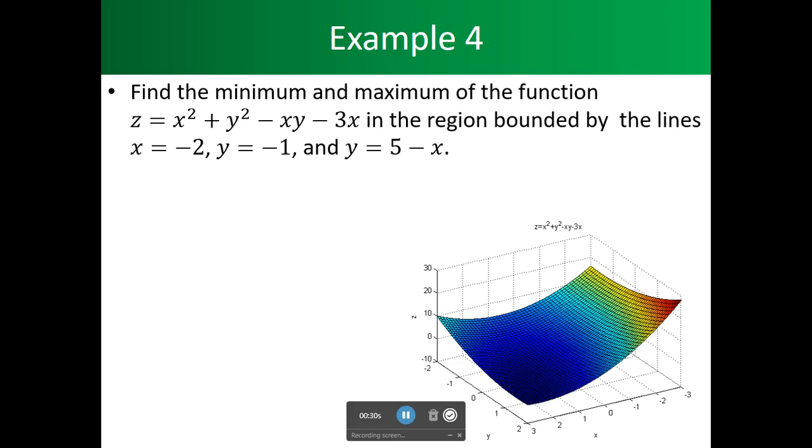Find the minimum and maximum of the function z equals x squared plus y squared minus xy minus 3x in the region bounded by the lines x equals minus 2, y equals minus 1, and y equals 5 minus x. We have here our equation and the plane that this is lying in.